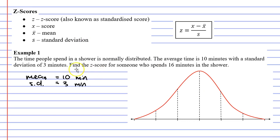Find the z-score for someone who spends 16 minutes in the shower. There are two methods to solve this: we can use the formula here, or we can use a bit of common sense by looking at our bell curve. We'll start with the common sense method.